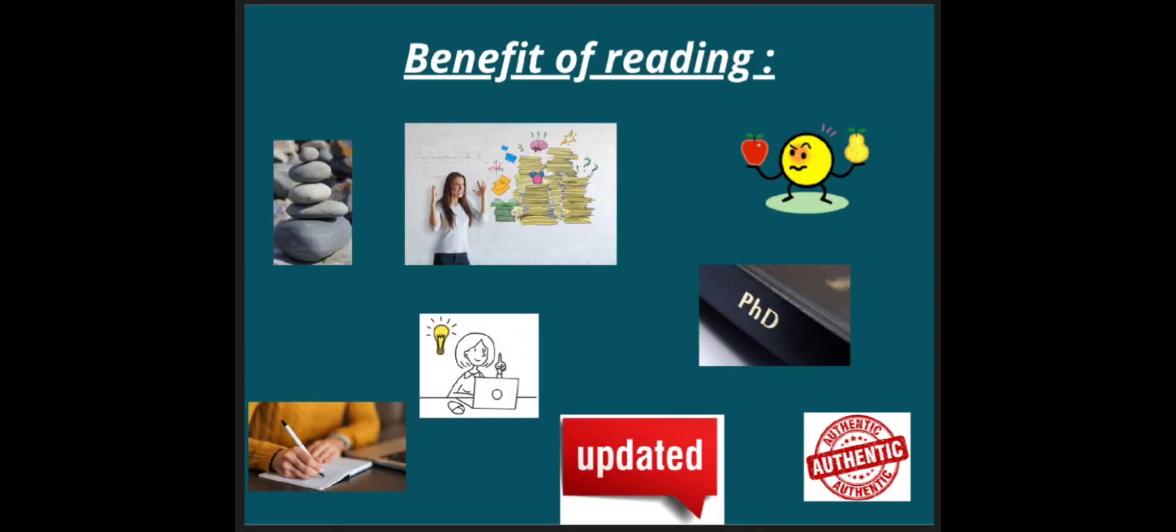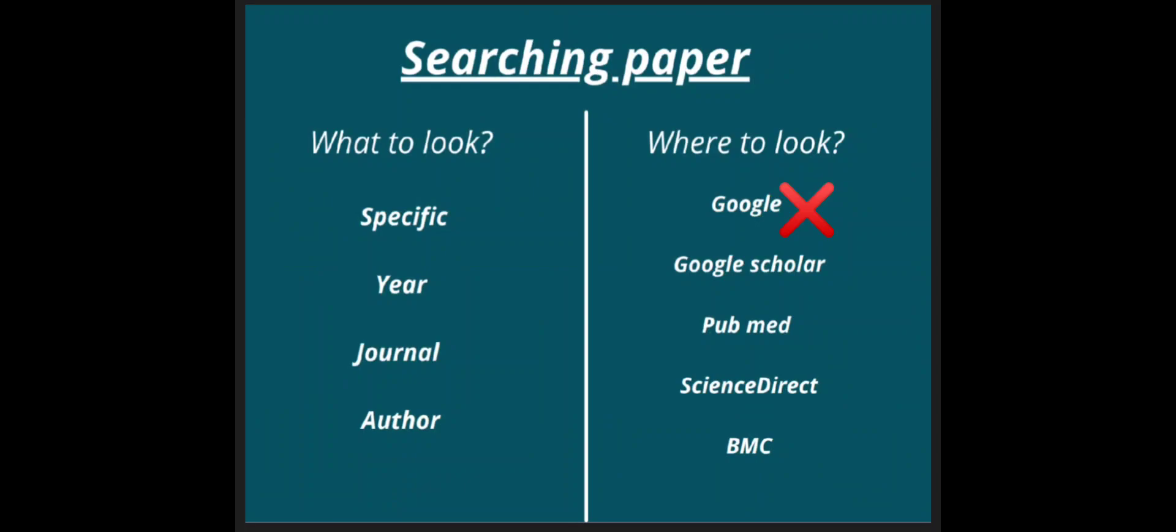There are thousands and thousands of research papers already existing in online journal databases. For effective searching, two things are crucial: first, what you are looking for, and second, where to look for it.